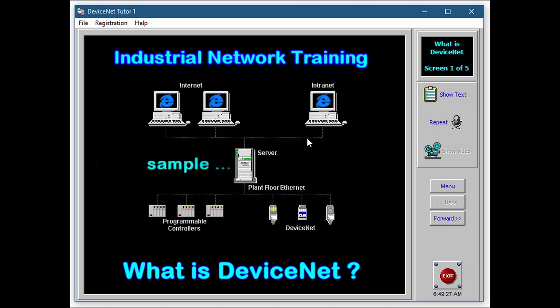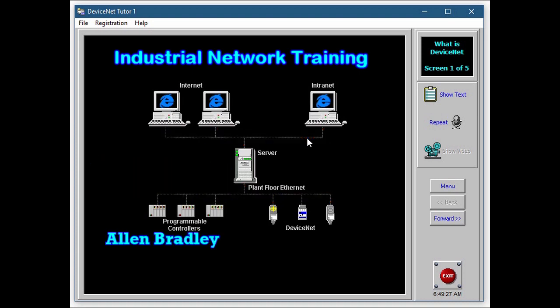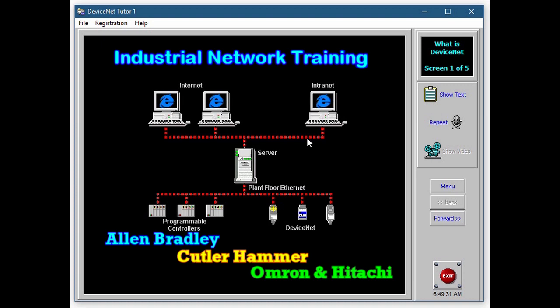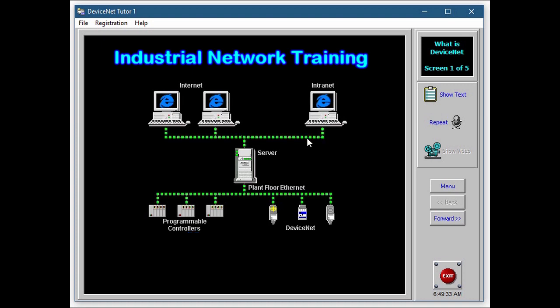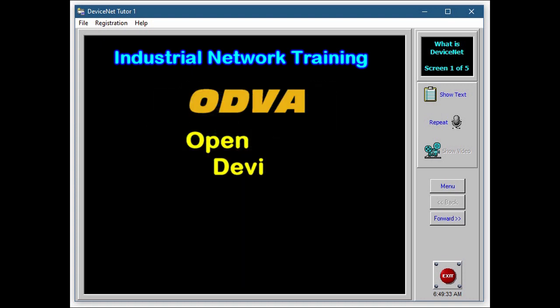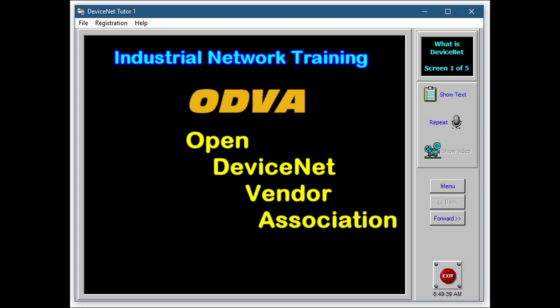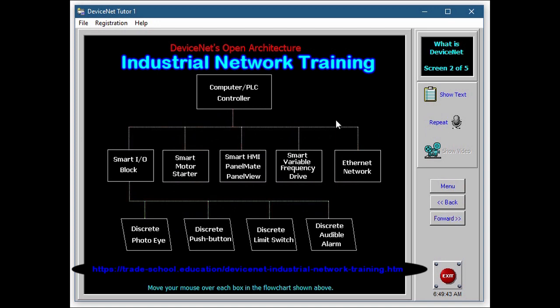Alan Bradley along with Cutler Hammer, Amron and Hitachi founded the ODVA Open DeviceNet Vendor Association. The concept of this association would allow any manufacturer of electrical components or discrete I.O. to become a member of the ODVA.